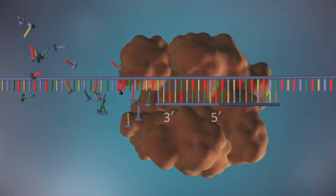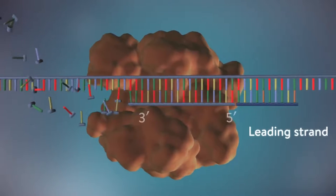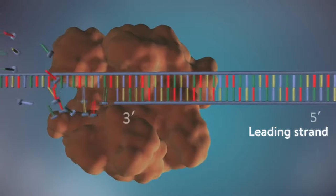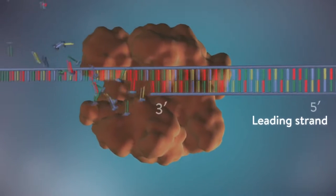One of the new strands of DNA, the leading strand, is made continuously, the DNA polymerase adding bases one by one in the five prime to three prime direction.